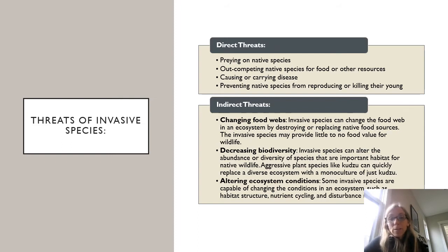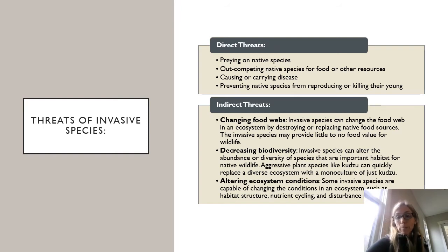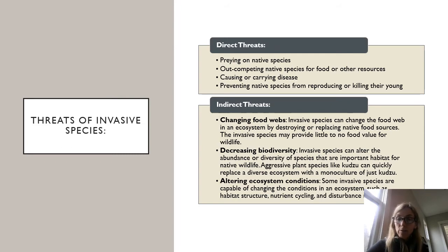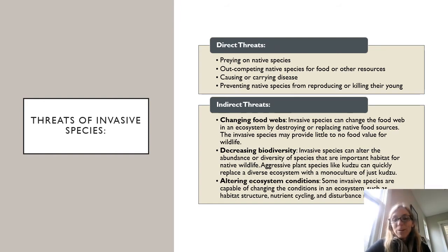Threats of invasive species include direct threats where invasives may prey on native species, outcompete native species for food and resources, carry diseases, or prevent native species from reproducing or kill their young. There are also many indirect effects — changes in food web dynamics, decreasing biodiversity, and altering the abundance or diversity of species that are important habitat for native wildlife. Aggressive plant species like kudzu can quickly replace a diverse ecosystem and create a monoculture. We also see altering of ecosystem conditions such as habitat structure, nutrient cycling, and disturbance regimes.